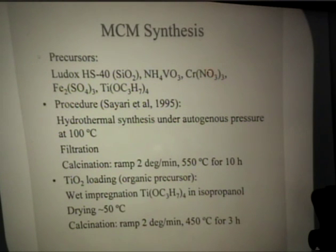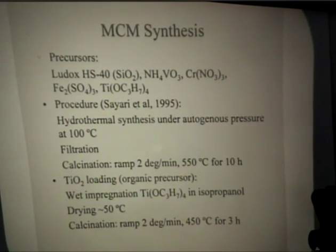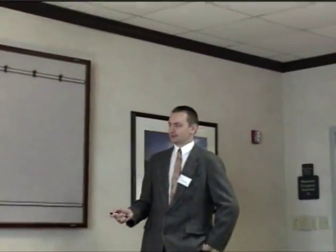MCM41 materials have a tubular pore structure — it's essentially amorphous silica with well-defined cylindrical pores. We used a number of transition metal precursors to be incorporated into MCM41 during synthesis. We concentrated on chromium, iron, and vanadium as our metals to be incorporated in the framework of MCM41. The second part of the composite catalyst is TiO2, which was loaded from an organic precursor — titanium isopropoxide.